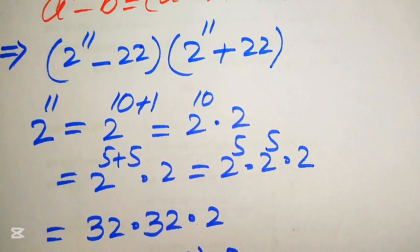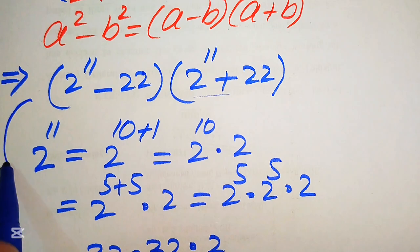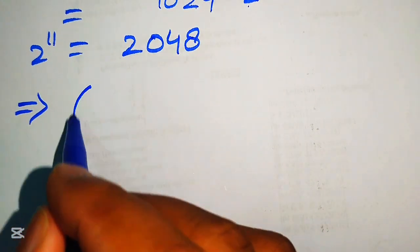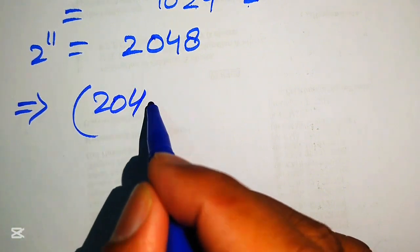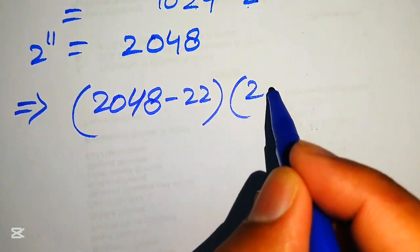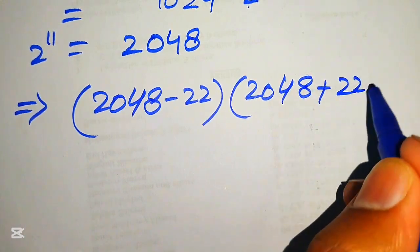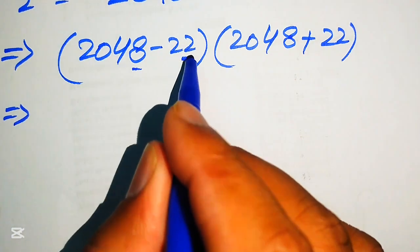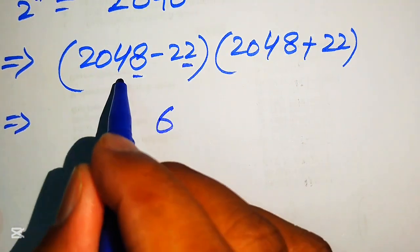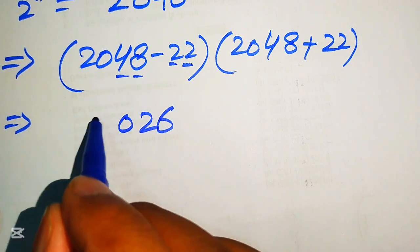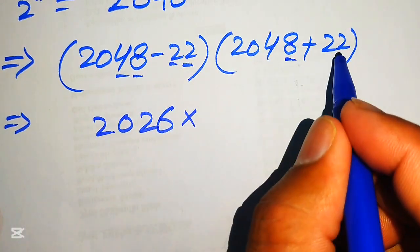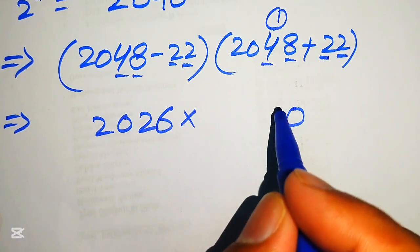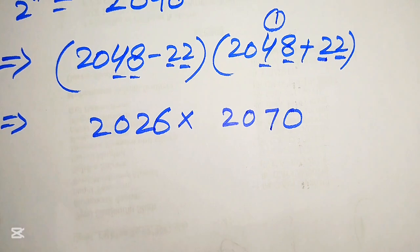Now we substitute into our two factors. The first factor is 2048 minus 22, and the second is 2048 plus 22. Subtracting: 8 minus 2 is 6, 4 minus 2 is 2, giving 2026. Adding: 8 plus 2 is 10, write 0 carry 1; 4 plus 2 is 6, plus 1 is 7; giving 2070.